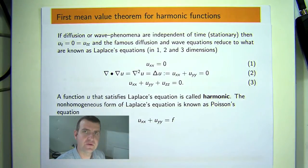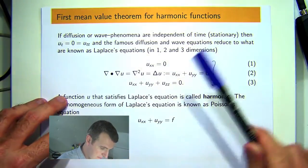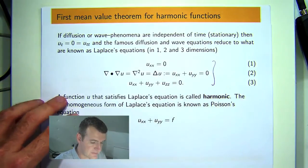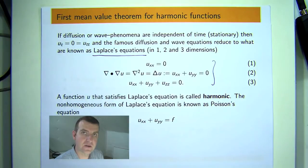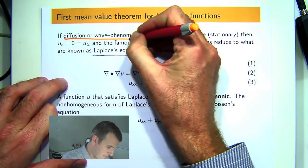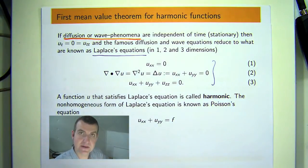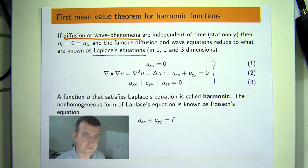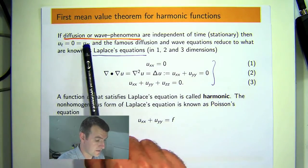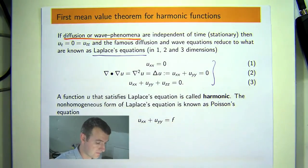Before we get to the statement and the proof of the result, let's set the bigger picture here. These kinds of equations here in one, two, and three spatial dimensions are known as the Laplace's equations. The Laplace's equation arises, for example, if you're considering diffusion, heat flow, or wave phenomena, where the dynamics are independent of time t. In that case, if you use the unknown function, of course, if it doesn't depend on t, then u sub t and u sub t t, the partial derivatives with respect to t, will be zero.